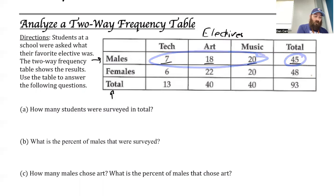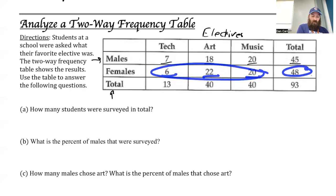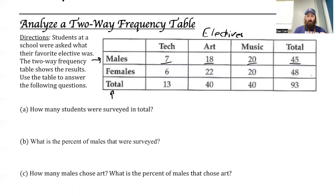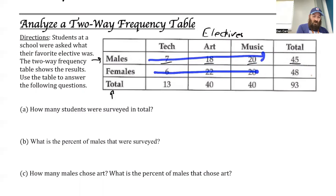Same thing with the females: six wanted tech the most, 22 liked art, 20 liked music. We add all those up, we have a total of 48 females who responded. So the total here adds up to 45, and the total here adds up to 48.